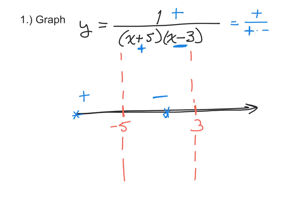Finally, pick a number on the last interval — like positive a billion. The numerator 1 is still positive. A billion plus 5 is positive, and a billion minus 3 is positive as well. Since every factor in the fraction is positive, every number on this interval will be positive.